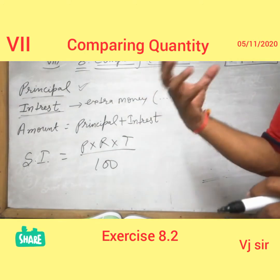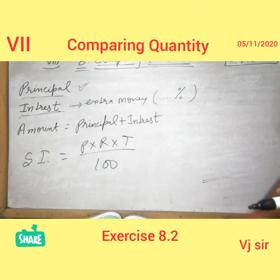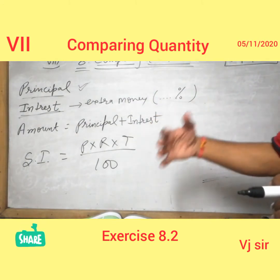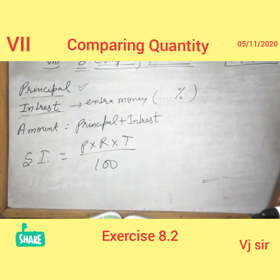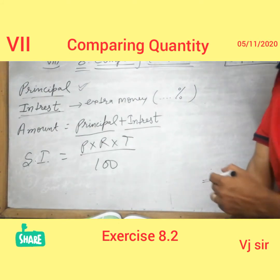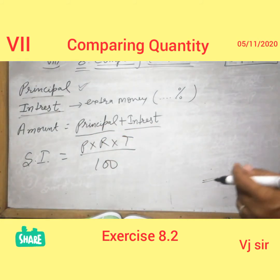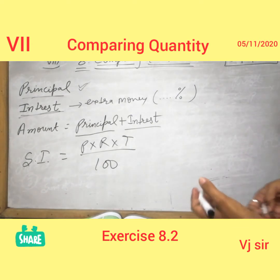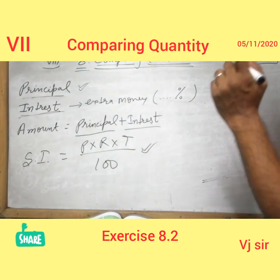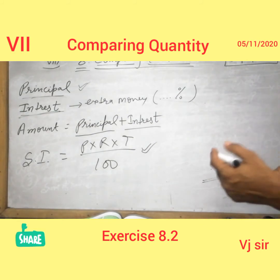Now the meaning of amount — after 5 or 7 years when I have to pay the complete amount back to the bank, the bank counts the principal amount plus the interest amount. That total, including the extra money with the principal, is called the amount. To count the interest, there is a formula for simple interest: P into R into T over 100, where P is principal, R is rate, and T is time — for how long you have taken the loan.